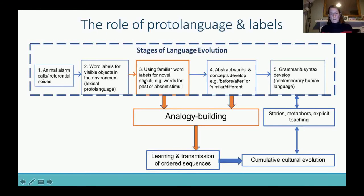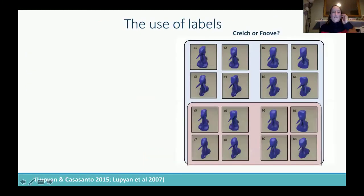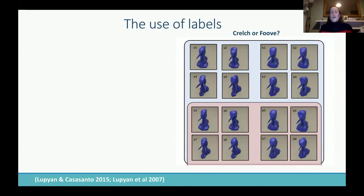Eventually you might be able to develop abstract words that allow you to make comparisons such as before/after or big/small, which is going to be even more helpful. This focus on labels is also crucial — I really like this study from Gary Lupyan where he used nonsense words, 'crelch' or 'foove,' to help people categorize novel stimuli of aliens.